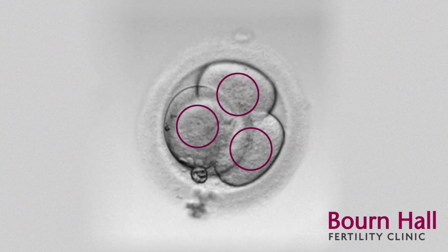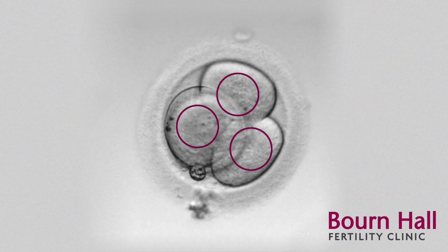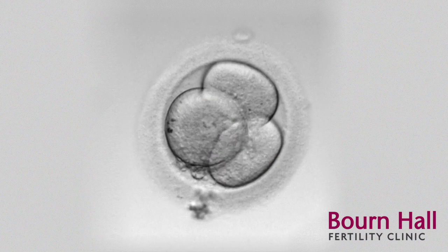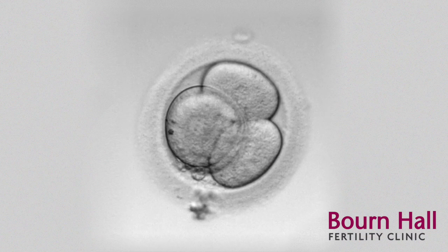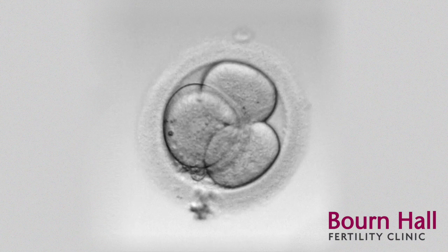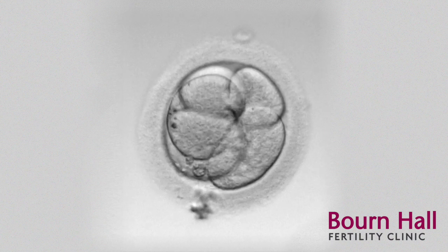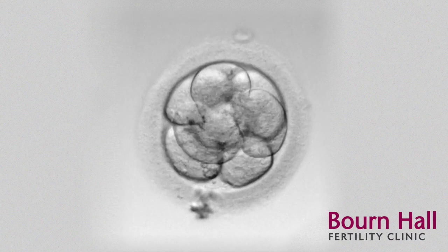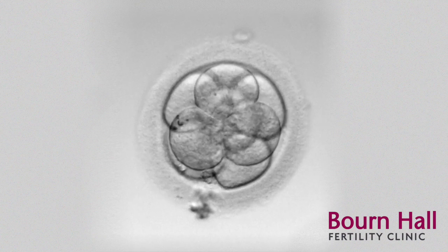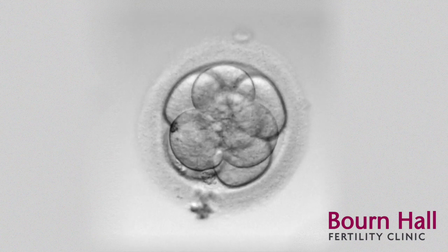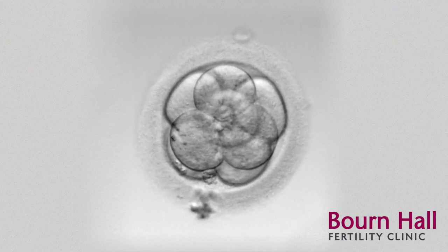The pale circular areas can just about be seen here, and these are the DNA material in each individual cell. The embryo then takes another rest, and then we will see again the pale areas — the nuclei — will fade and the cell divides again. So the embryo is now at eight cells.